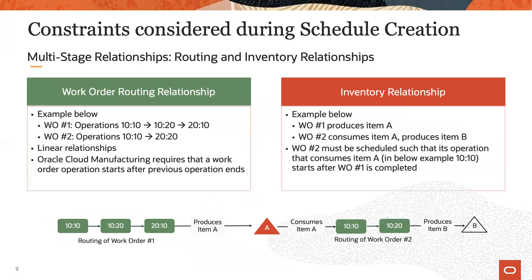Multi-stage manufacturing has two distinct relationships between stages. First, the set of operations within a work order form task dependencies between operations. Operation 1010 must be completed before operation 1020 can start, and so on.